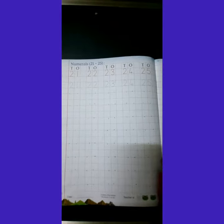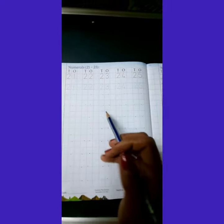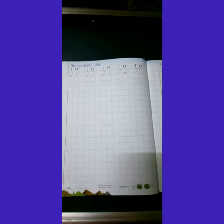Children, today we are going to write numbers 21, 22, 23, 24, 25 in your maths workbook, page number 28.